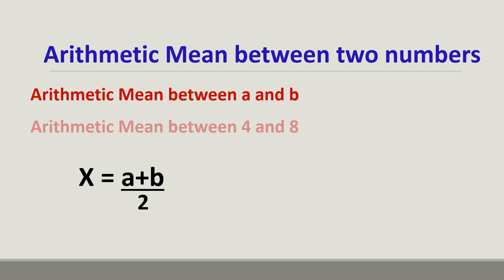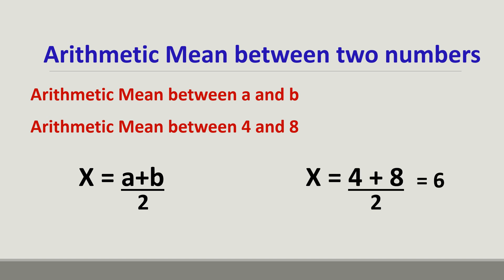So, we can find the arithmetic mean between two numbers, 4 and 8. It will be (4 + 8) / 2, that is 6.